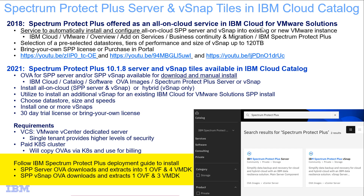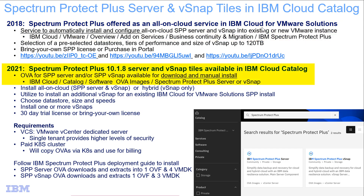You will then use these to do the installation following the normal deployment guide. In this demo, I'll first show you our original service offering so you know where that's at, and then I'll switch gears and show you the new tiles and how to use them to download the OVAs and do the manual installation of the Spectrum Protect Plus Server and/or vSnaps.